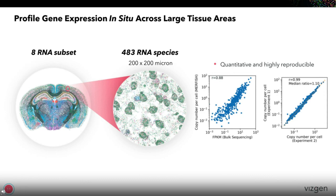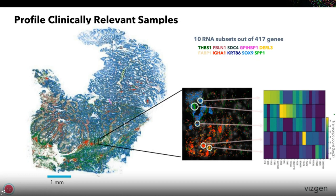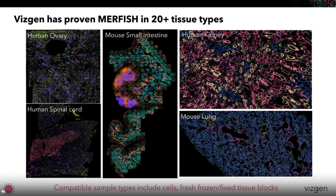This has also been used in more clinically relevant samples. For example, shown here is using a panel of 417 genes in human colon cancer. Just 10 RNA subsets selected out of these 417 genes already yields a lot of biological insights. Within VisGen, we keep pushing the limit of the technology by expanding the application areas. We have demonstrated MERFISH in more than 20 different mouse and human tissues. These beautiful images illustrate how incredible the special architecture of different tissue types can be, and how important it is to have this highly sensitive and versatile tool.